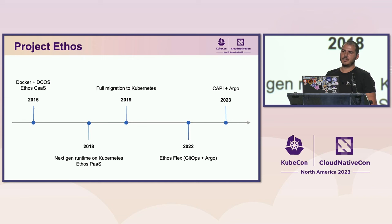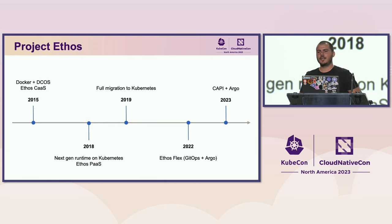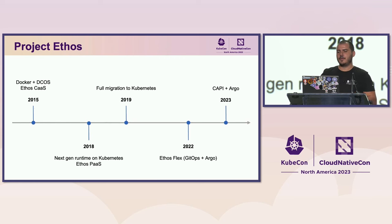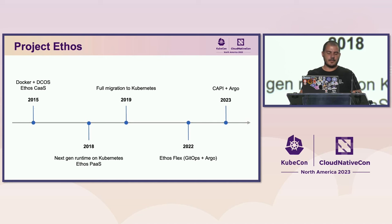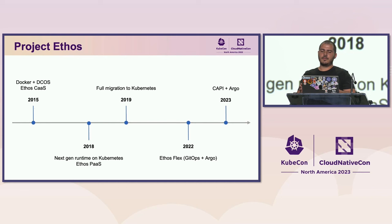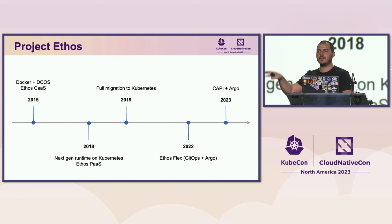In 2018, we started development of the next generation runtime platform based on Kubernetes. We identified an opportunity within Kubernetes namespaces and added them as a new option for our developers. This solution is called Ethos PaaS, which stands for platform as a service. With Ethos PaaS, developers take ownership of the Kubernetes namespace and can deploy their application inside using their preferred CI/CD tool.